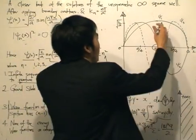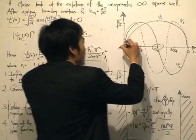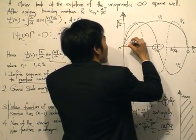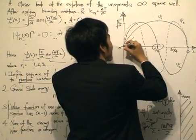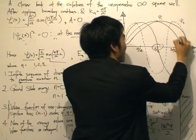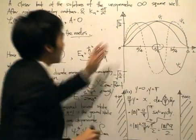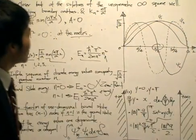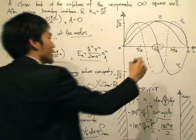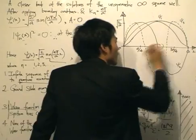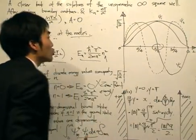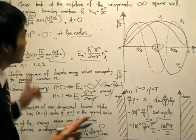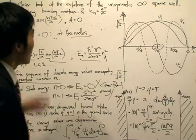For psi 1, there are no nodes, so the probability density is very easy — it forms one continuous region. For psi 2, there is a node at A divided by 2, so the probability density for psi 2 will be broken up into two regions. I want to scale down the probability density — let's say 1 is over here — so we are sketching the probability density and scaling it down.